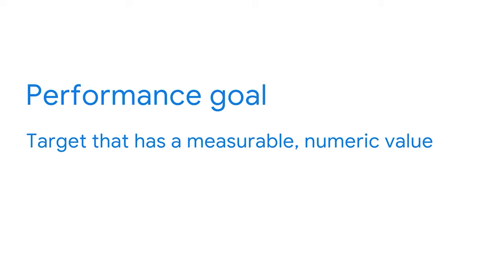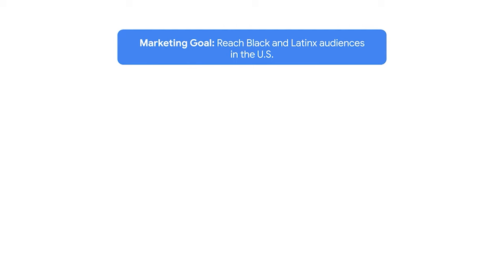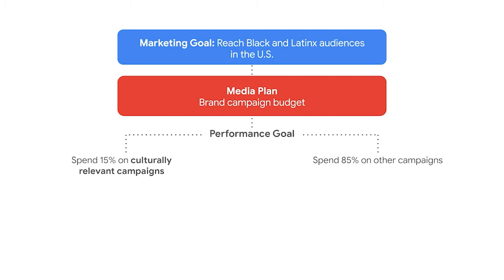These are examples of performance goals. A performance goal is a target that has a measurable numeric value. Performance goals can apply to marketing goals or specific campaigns in a media plan. When performance goals apply to marketing goals, they are sometimes called marketing objectives. Here's a real example of the power of a media plan with a clear marketing objective: Google had a marketing goal to reach Black and Latinx audiences in the United States.